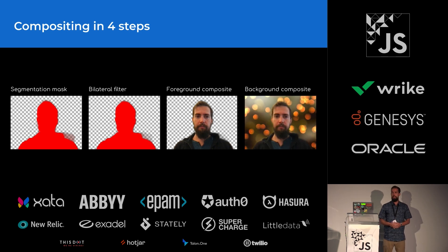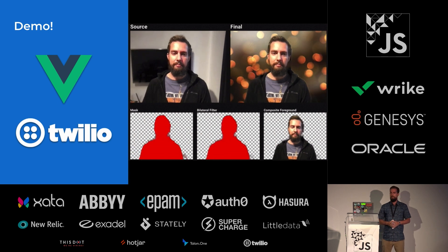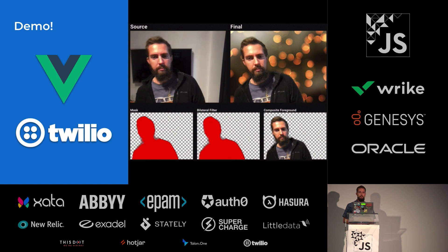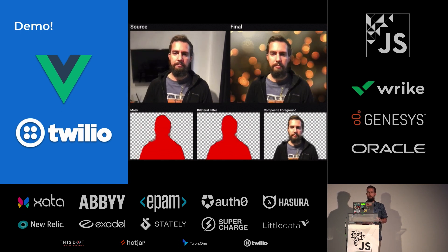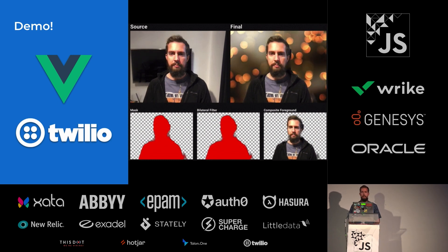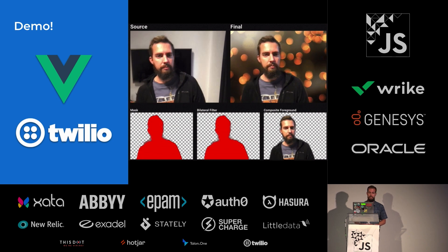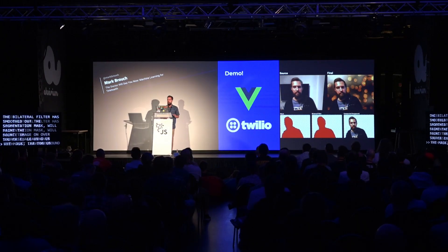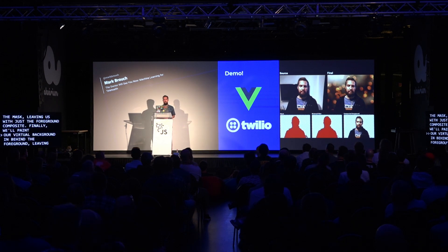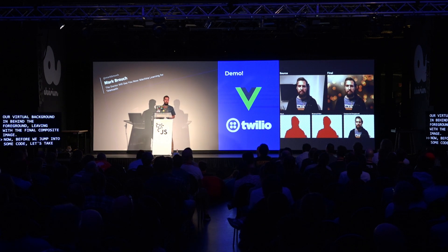Once the bilateral filter has smoothed out the segmentation mask, we'll paint the source image on over the mask, leaving us with just the foreground composite. And then finally, we'll paint our virtual background in behind the foreground, leaving us with the final composite image. The demo app is a Twilio video application running on Vue and Nuxt that captures webcam input and applies a virtual background effect to it. Twilio video is by no means required to build a virtual background feature, but we're going to use it for the demo to show how you might build this feature in a real WebRTC video chat context. Be warned that the demo only works in browsers that support the off-screen Canvas API, so you'll want to try this out on your desktop Chrome browser for now.